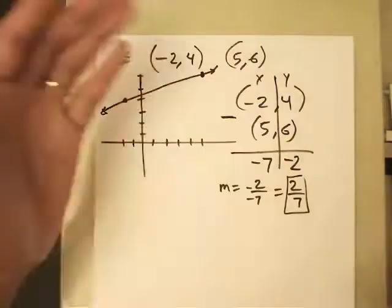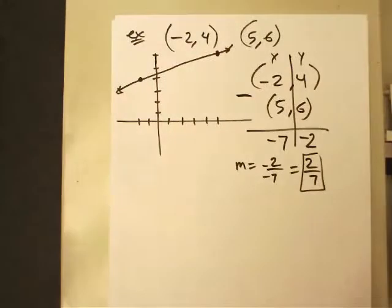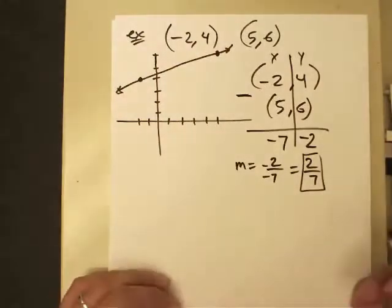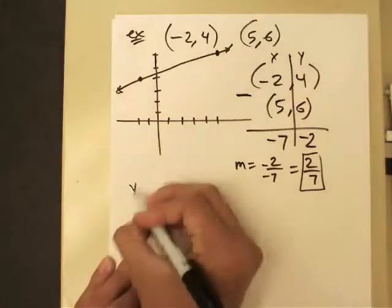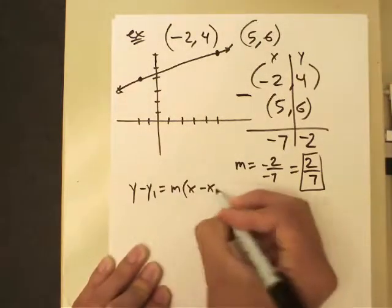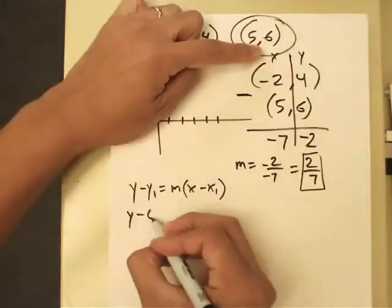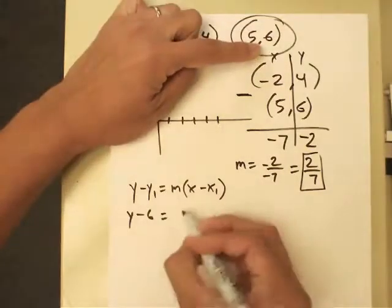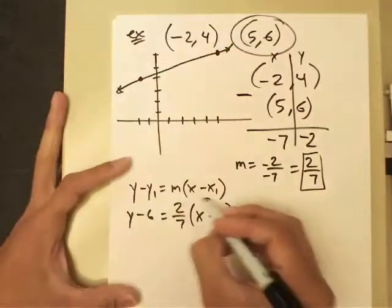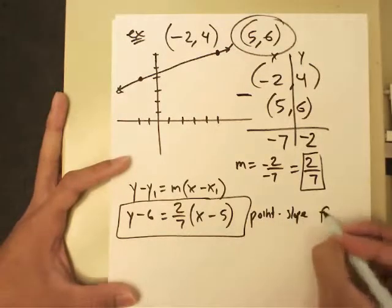And notice I have more than what I need. I just need one point to use, so I can pick any one I want, and I will be able to get the same exact answer, believe it or not. You can certainly try, but here's my point-slope form that I'm going to use. So let's say I pick (5, 6). Then I'm going to plug in 6 for y₁. I'm going to use my slope of 2/7, x minus x₁, which is 5. Right here is the point-slope form.